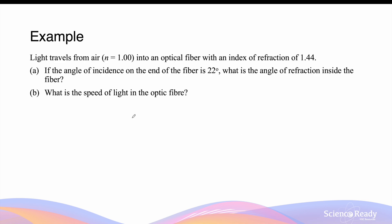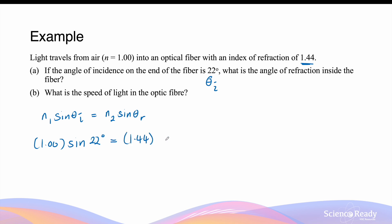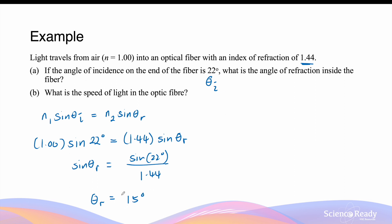Let's go through a calculation example using Snell's law. Light travels from air with a refractive index of 1 into an optic fibre which has an index of refraction of 1.44. If the angle of incidence at the end of the fibre is 22 degrees, what is the angle of refraction inside the fibre? Using Snell's law — n1 × sine(theta-i) = n2 × sine(theta-r) — with n1 = 1.00 and theta-i = 22°, and n2 = 1.44, we find sine(theta-r) = sine(22°) / 1.44, giving an angle of refraction of 15 degrees. This is expected because the refractive index of the optic fibre is higher than that of air.